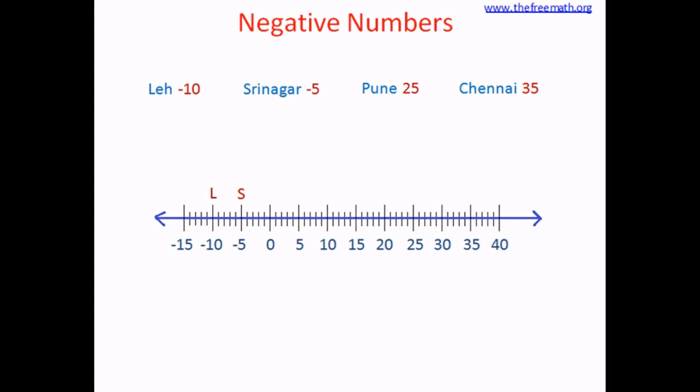Looking at the difference between Leh and Srinagar — between negative 10 and negative 5 — there are five steps in between, so Srinagar's temperature is 5 degrees more than Leh's. As you go right the temperature increases, as you go left it decreases. Even though 10 looks bigger than 5, negative 10 is actually smaller than negative 5, so Srinagar's temperature is higher than Leh's.